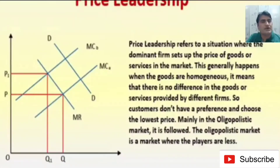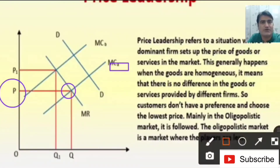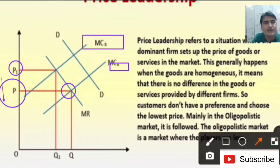The oligopoly market is a market where the players are few. The dominant firm decides the price P; its marginal cost is such that MC touches the marginal revenue from below at that point. Other firms' cost is higher and they want to set their price at P1. If the dominant firm decides the price P, then the other firms should reduce their price in order to retain their existing share of the market.